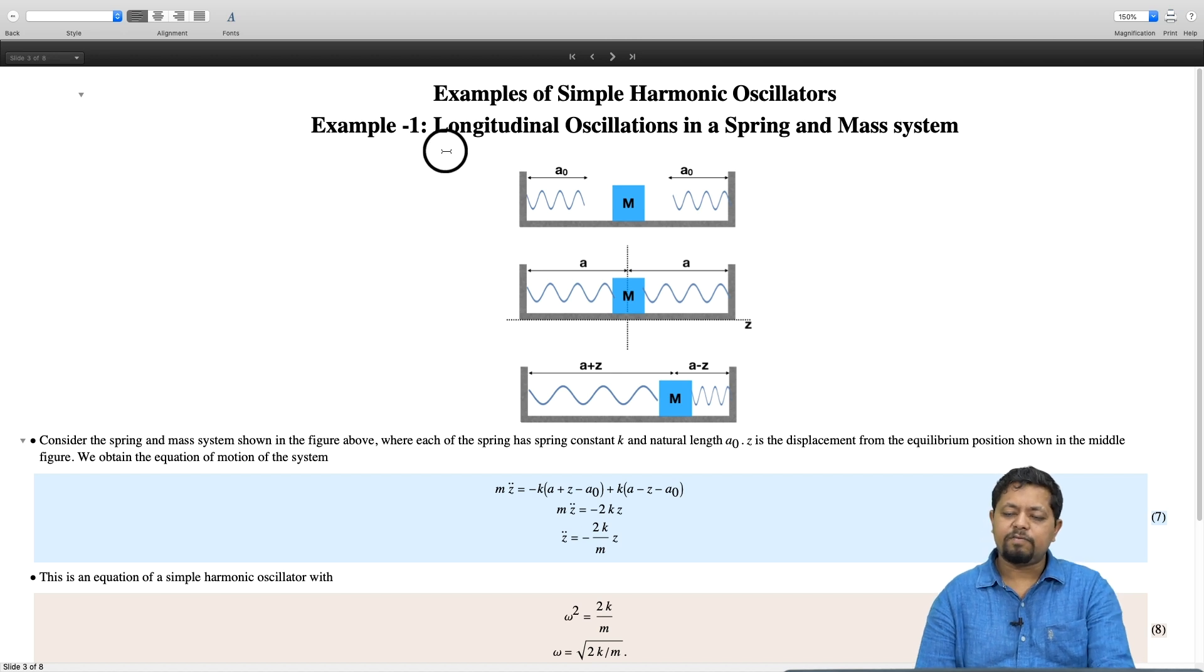Let us take an example of a simple harmonic oscillator. You are all familiar with the spring and mass system. We will take an example of longitudinal oscillations in the spring and mass system. Consider a system given by this setup. We have got a wall over here, another wall on the right side.